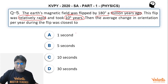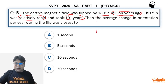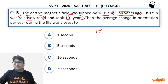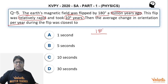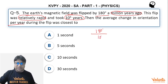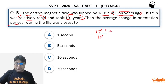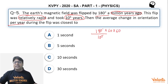To solve this, we divide 180 degrees by 10^5 years. The question asks us to calculate the average change in orientation per year and give the answer in arc-seconds. So 180 degrees is converted to minutes (multiply by 60) and then to seconds (multiply by 60 again).